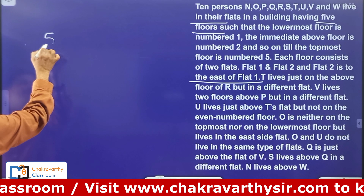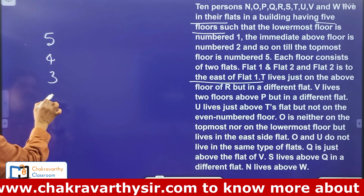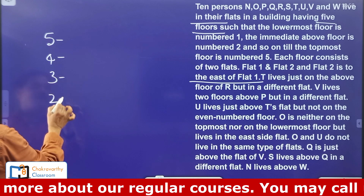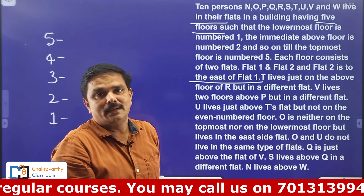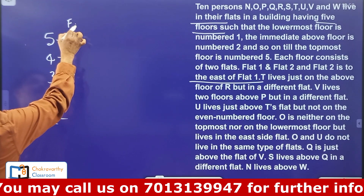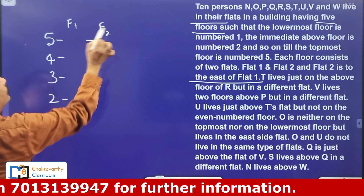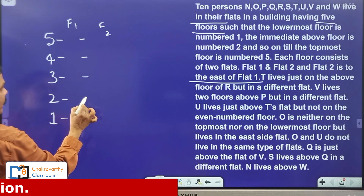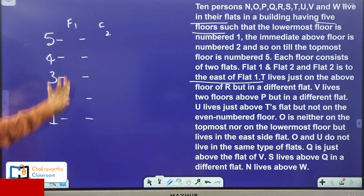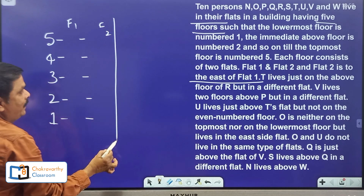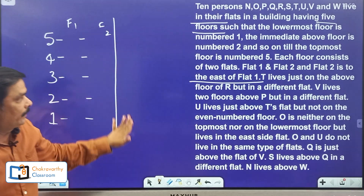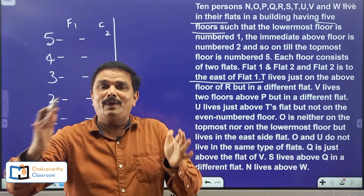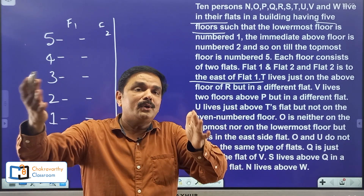How to depict this? We may go like this: the topmost floor is given number 5, followed by 4, 3, 2, and 1. Again, they have categorized flat 1 and flat 2 on each floor. I am taking flat 1 on the left and flat 2 on the right, to accommodate 10 persons — 5 here and 5 here according to the given conditions. In puzzle solving, doing rough work is very, very important. While doing the rough work, try to correlate one clue with the other.